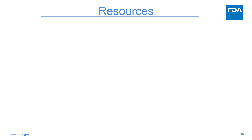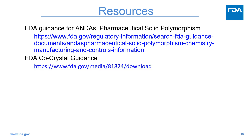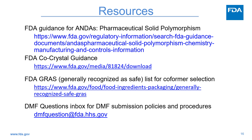This slide lists some helpful resources you can use when preparing your DMF submission: a link to FDA guidance for pharmaceutical solid polymorphism, the link to the updated co-crystal guidance, the website for FDA's generally recognized as safe (GRAS) list for co-former selection, and the DMF question email inbox where you can submit questions regarding DMF submission policies and procedures.